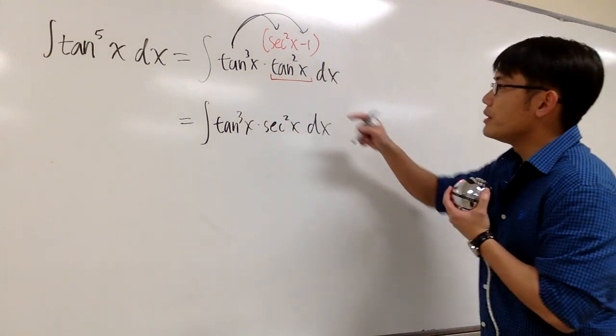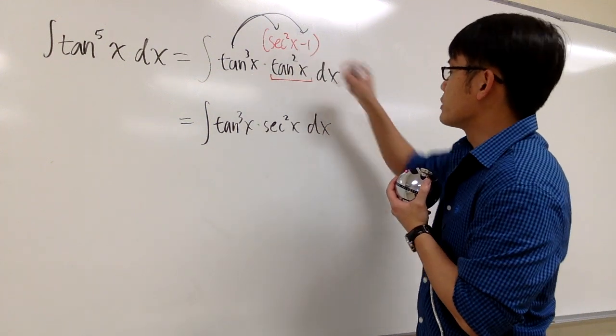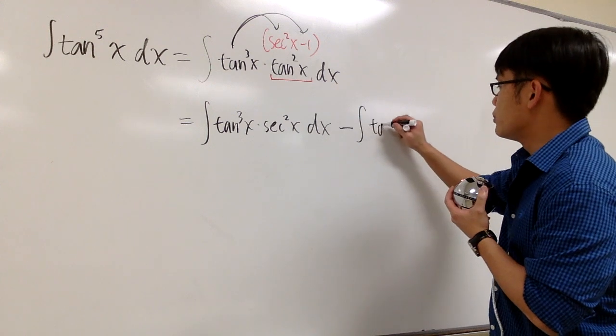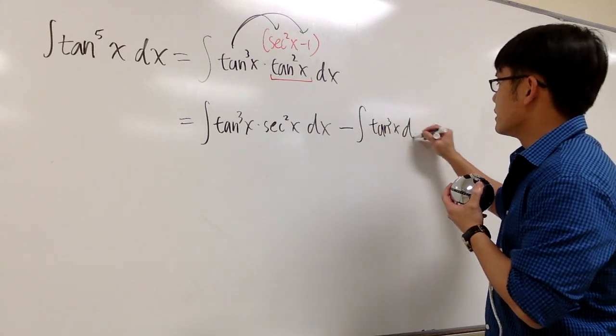And the second integral will be tangent to the third power minus 1. So it will be a minus integral tangent to the third power times 1 is going to be just tangent to the third power x dx.